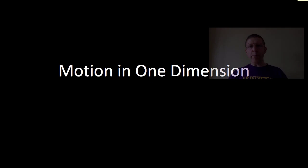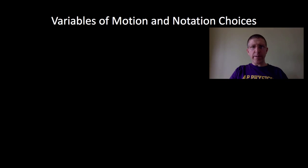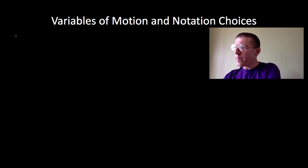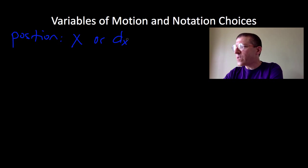In this video, we're going to be talking about motion in one dimension. Specifically, we're going to be talking about some of the variables of motion and some notation choices that we have. To start off, how are we going to represent position? Position, where the object is in space, we can represent with the symbol X or, if you prefer, D sub X.